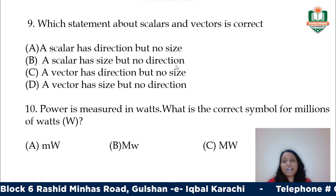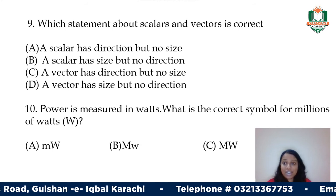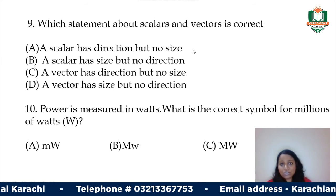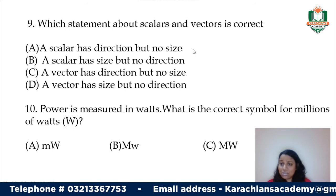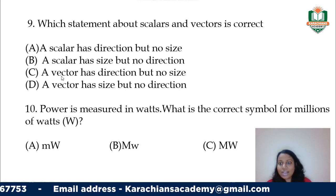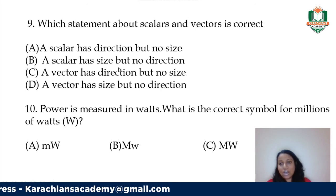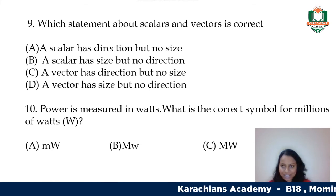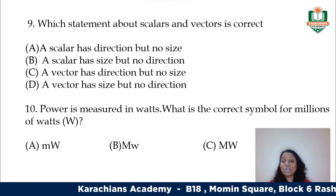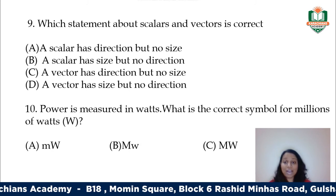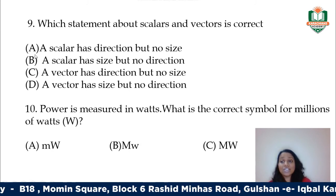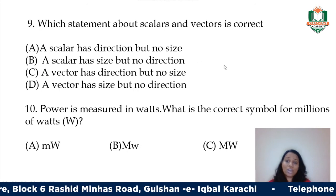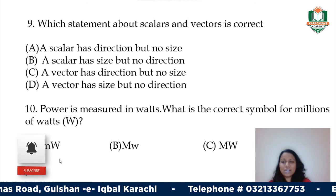This question gives statements about scalars and vectors — which is correct? A scalar has direction but no size — incorrect. A scalar has size but no direction — correct. A vector has direction but no size — incorrect. A vector has size but no direction — incorrect. Scalars give magnitude with no direction; vectors give both direction and magnitude. The correct option is B: a scalar has size but no direction.